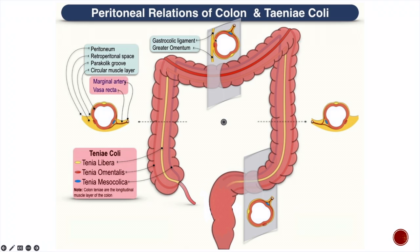There is one more relation shown here. The greater omentum, which sags down from the greater curvature of the stomach with its first and second layers, ascends back with its third and fourth layers and joins the transverse colon on its anterior surface. This part of the greater omentum between the greater curvature of the stomach and the transverse colon is called the gastrocolic ligament. The part of the greater omentum sagging down below the transverse colon is called the greater omentum.